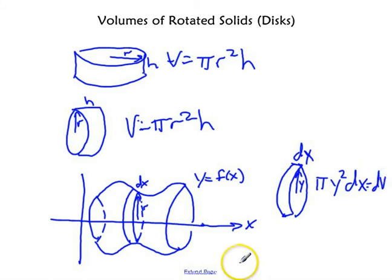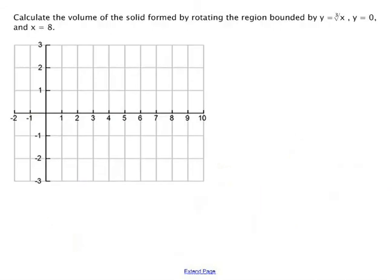Let's look at a couple of examples. This problem says to calculate the volume of the solid formed by rotating the region bounded by y equals the cube root of x, y equals 0, which is the x-axis, and x equals 8.